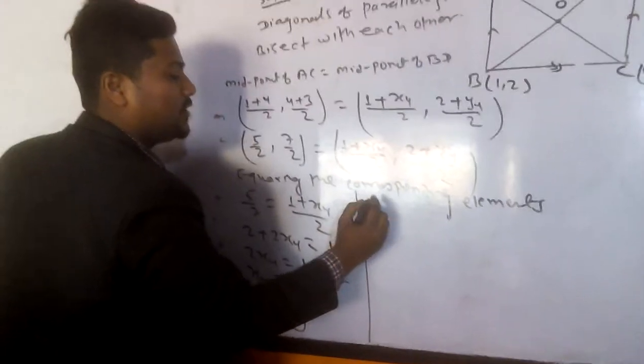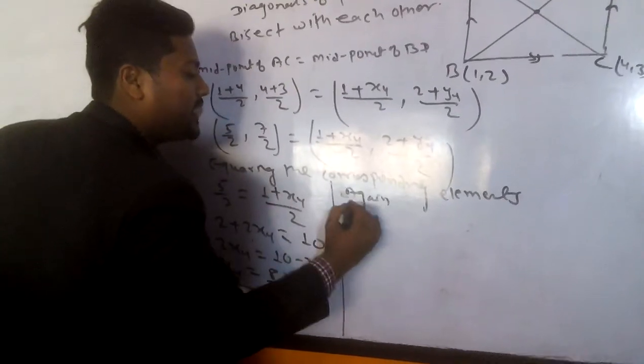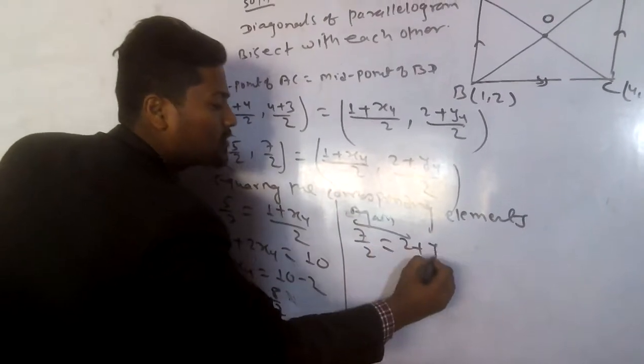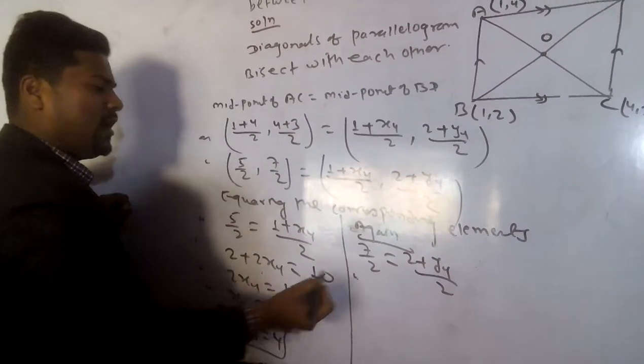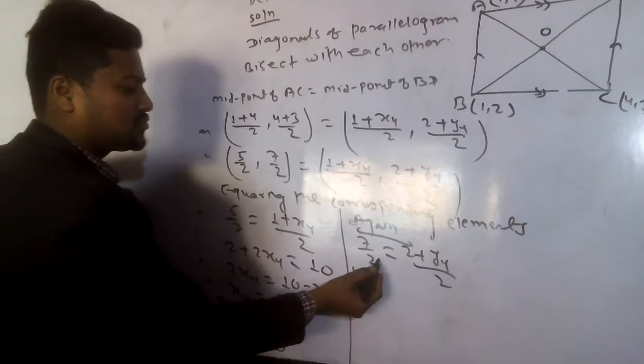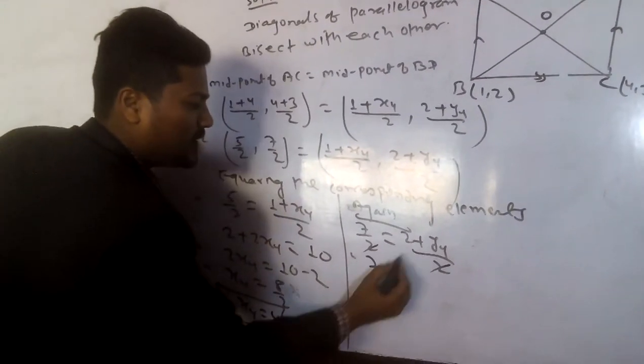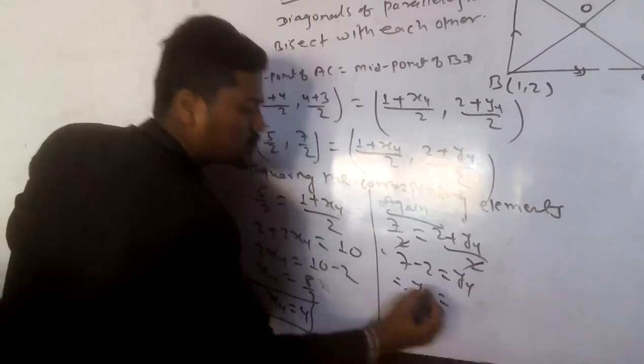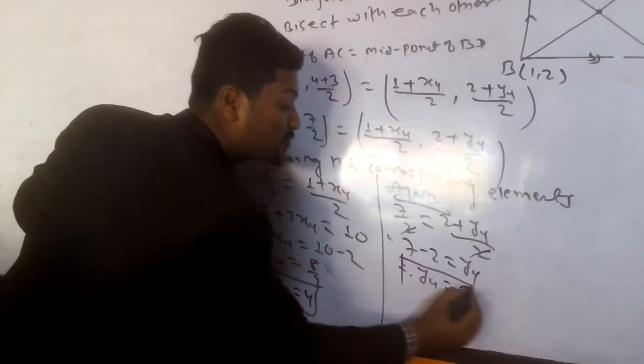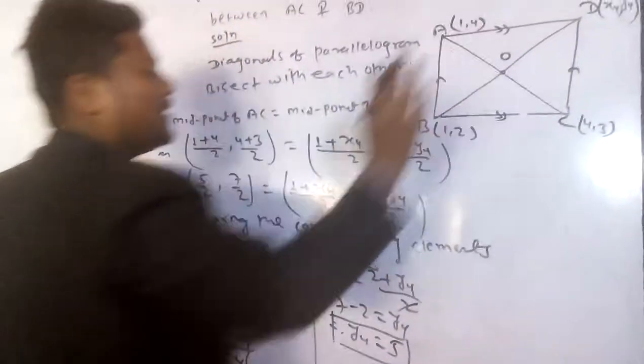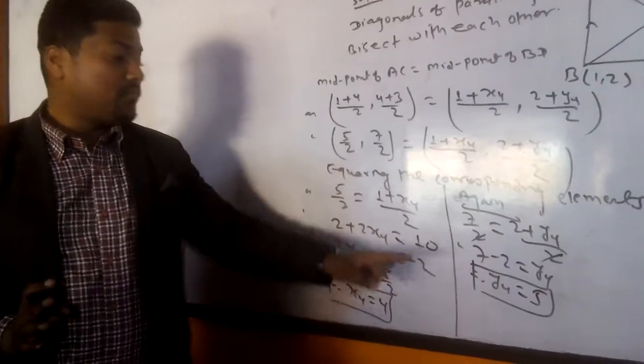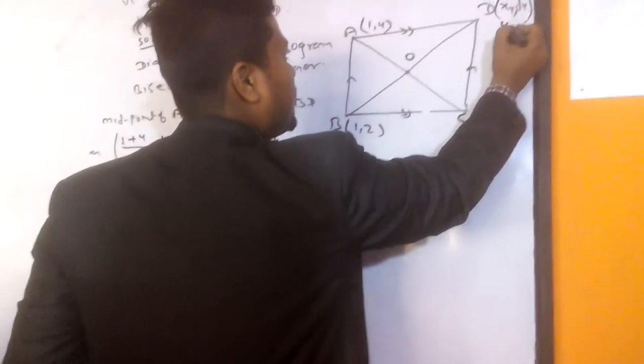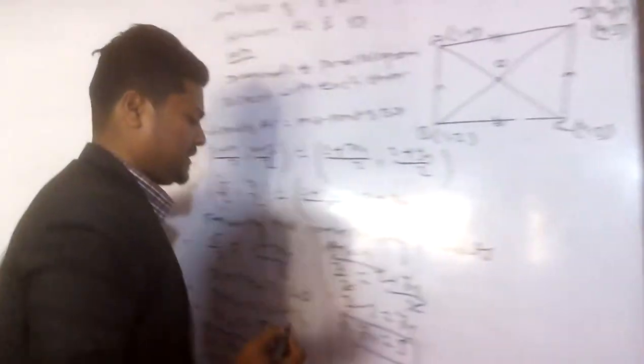So now similarly, 7 by 2 is equals to 2 plus Y4 by 2. Again cross multiplication. Or simply we can cut also this 2, 2. Easy. 7 minus 2 is equals to Y4. Therefore Y4 is 5. So coordinate of D will, what comes? 4, 5. 4, 5. Good.